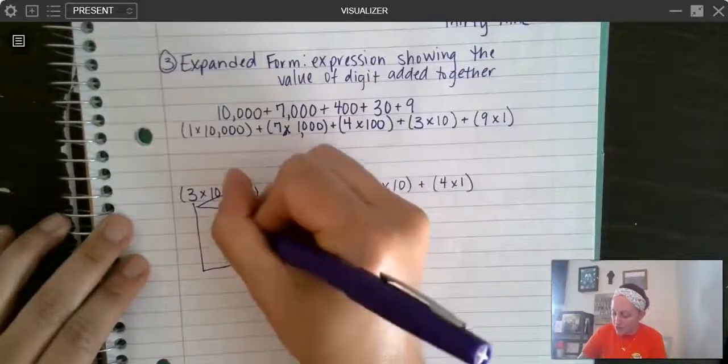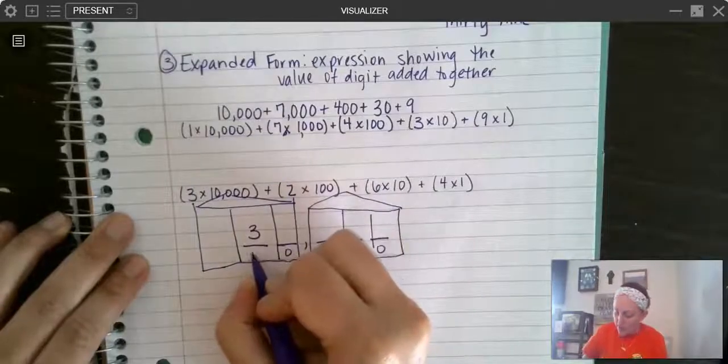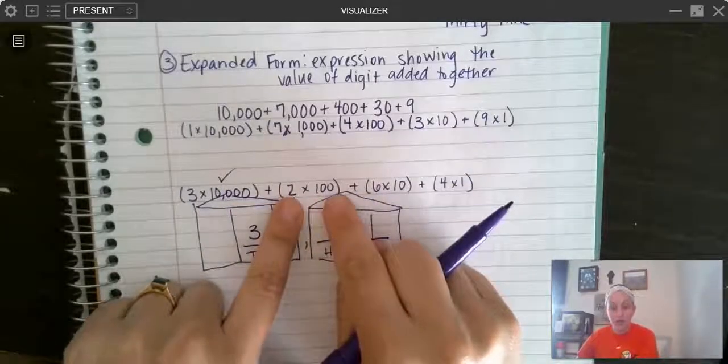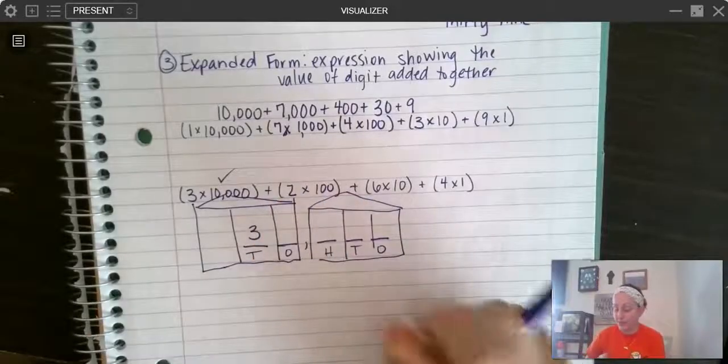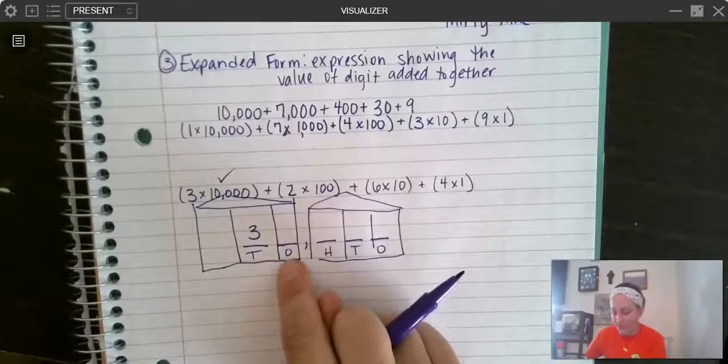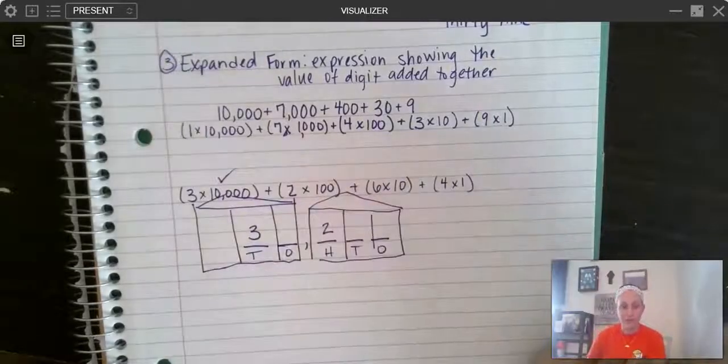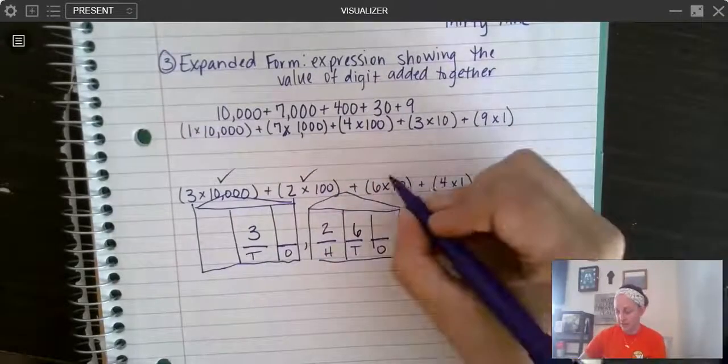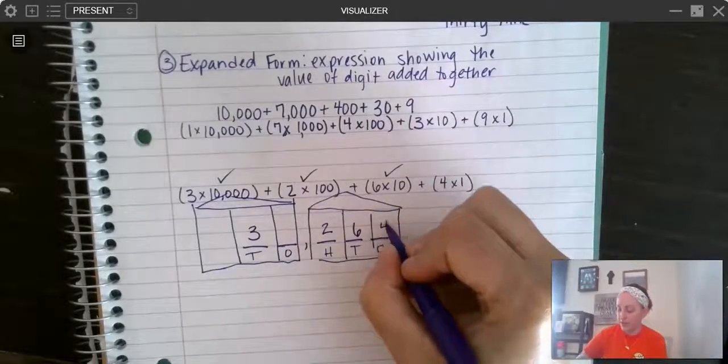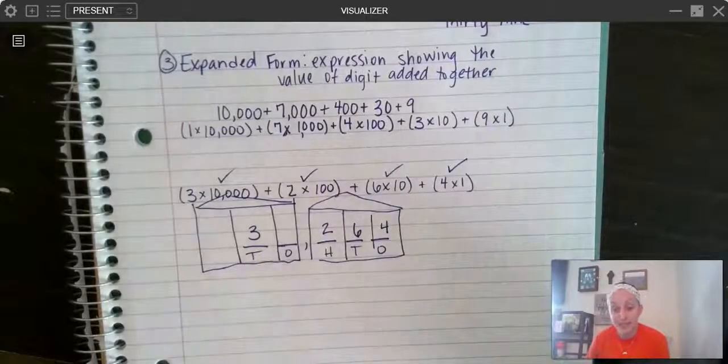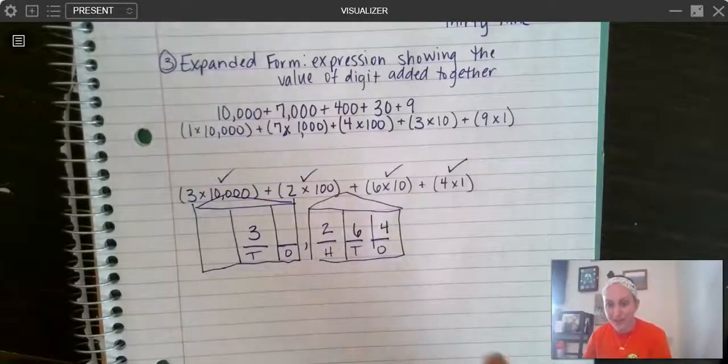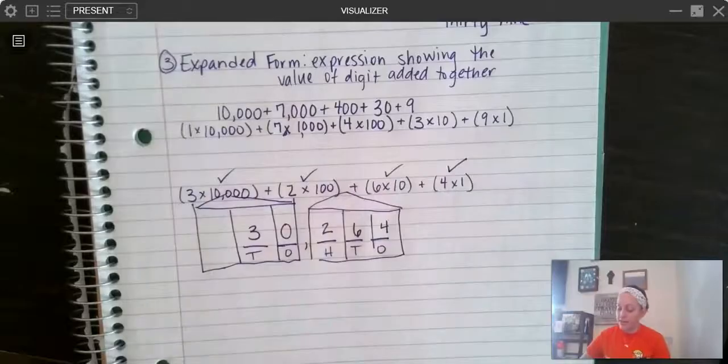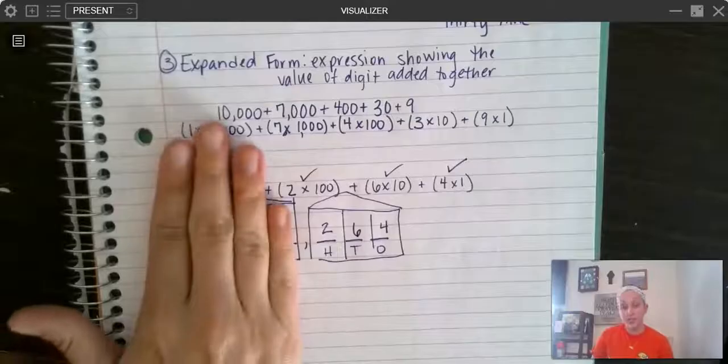Now I have 2 times 100. So the 2 is going to go in the hundreds place. Does it go here? No, that's the thousands place. It has to go in the hundreds place. I did that one. Now we have 6 times 10. The 6 goes in the tens place. 4 times 1. The 4 goes in the ones place. Notice I have an empty space. If you're doing place value and you end up with an empty space, you always fill empty spaces with a 0. So this number right here is 30,264.